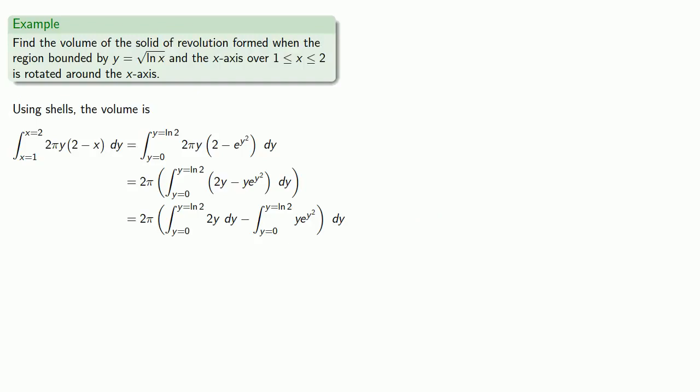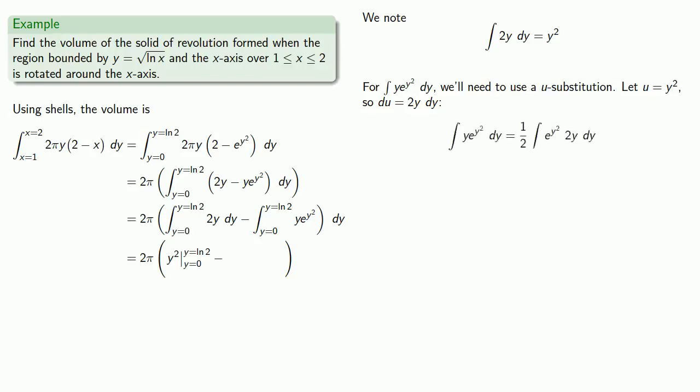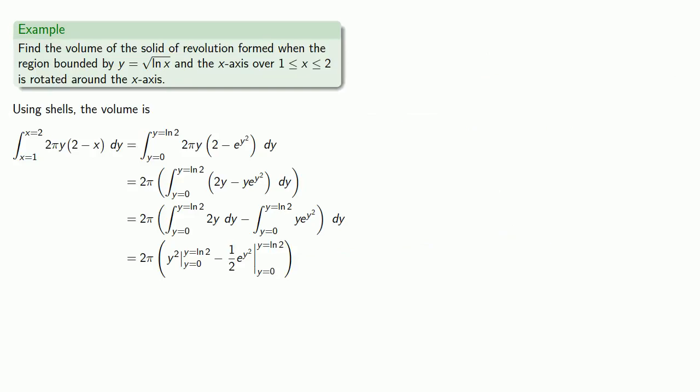We can evaluate the antiderivative separately. The antiderivative of 2y is y². For the other antiderivative, we'll use u-substitution. Let u = y², make the substitution, put everything back, and evaluate.